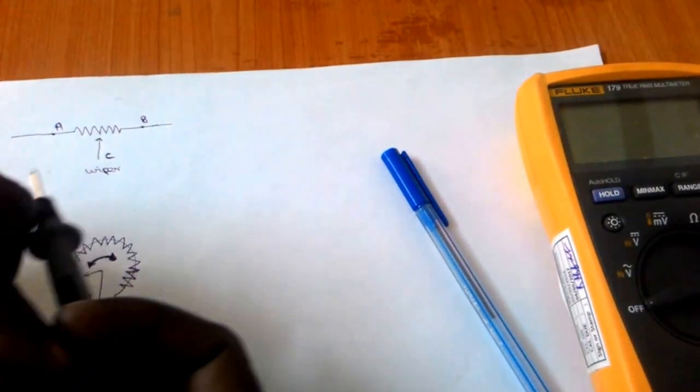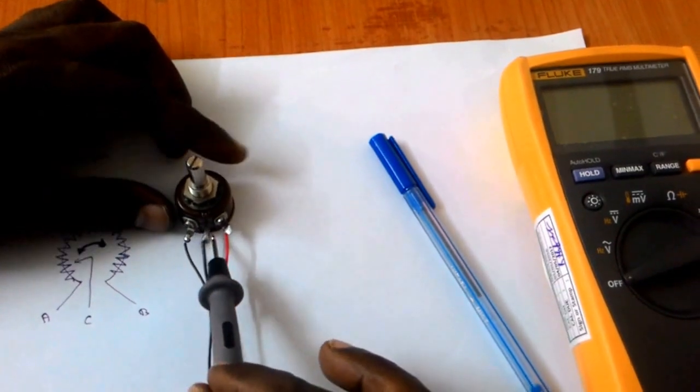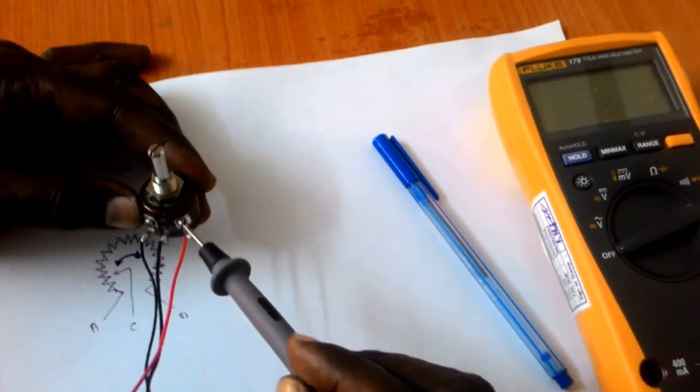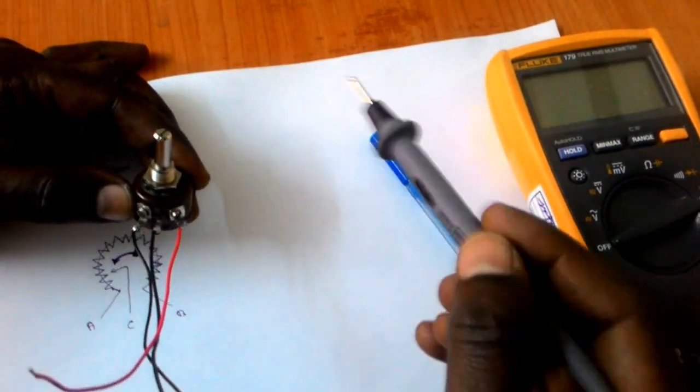And the pot has 3 terminals. The middle one, this is a wiper. You can see some differences there. Both are having some screw types, so we can remove, we can add it.